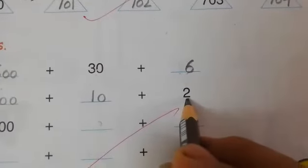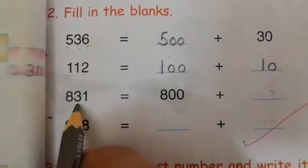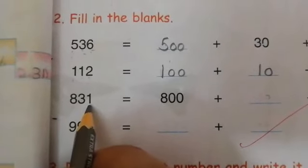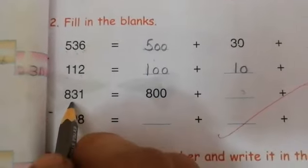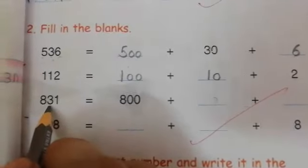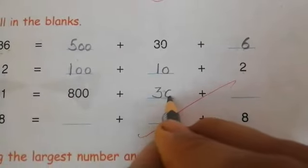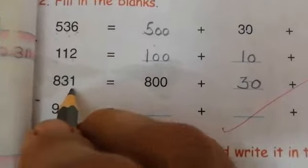Then we have written 2. Next number is 831. 800 is written here. How many tens are there? 3. 3 tens means 30. And how many ones are there? 1. We will write here 1.